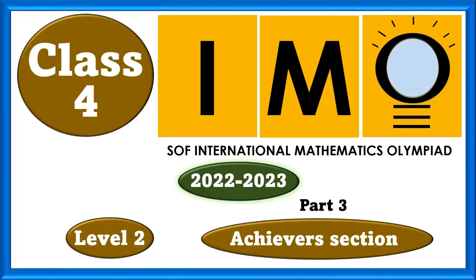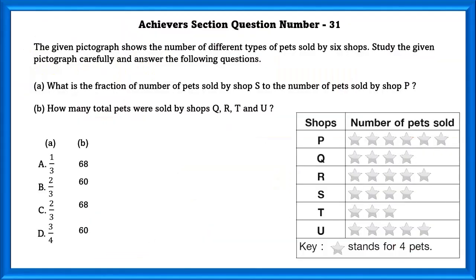Class 4 IMO Level 2 Achievers Section. Question Number 31. The given pictograph shows the number of different types of pets sold by 6 shops. Study the given pictograph carefully and answer the following questions.